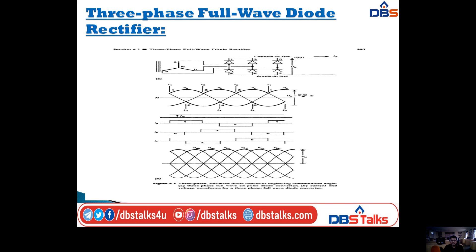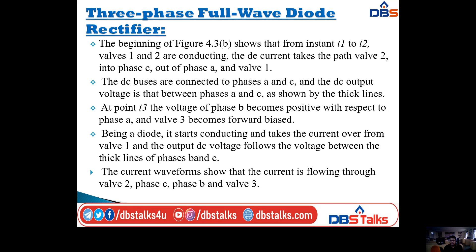At time instant t3, the voltage of phase B becomes positive with respect to phase A and valve three becomes forward biased. Being a diode it starts conducting and takes the current over from valve one, and the output DC voltage follows the voltage between phases B and C (shown by the thick lines). The current waveforms show that current is flowing through valve two, phase C, phase B, and valve three.